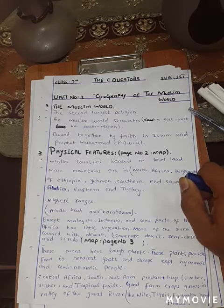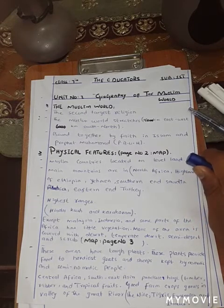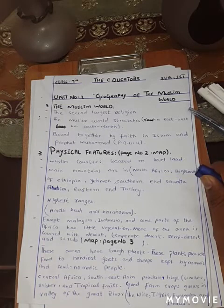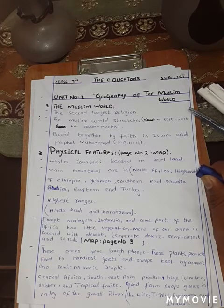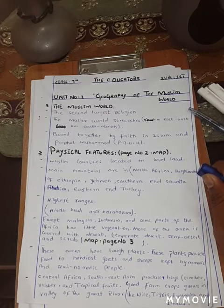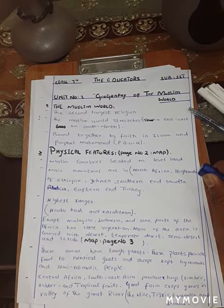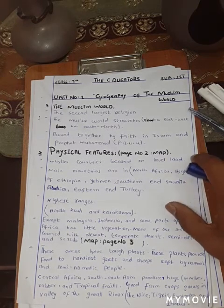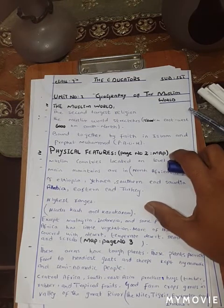These areas, due to desert, have tough plants. These plants provide food to herds, goats and sheep kept by nomad and semi-nomad people. Central Africa, Southeast Asia and India produce huge amounts of timber, rubber and tropical fruits because they have considerable rainforest. Good farm crops grow in the valleys of the great rivers: the Nile, Tigris, Euphrates and Indus, and other means of irrigation. This is your first chapter, all about.